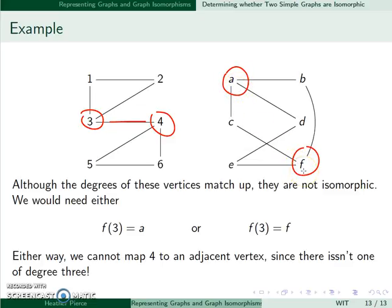Therefore, I could not map these together. So just because all of the degrees are the same does not mean they're necessarily isomorphic. I would still have to find a map, and that may or may not exist.